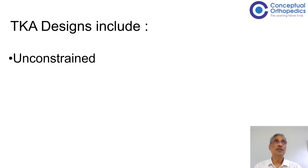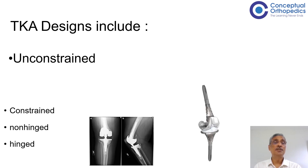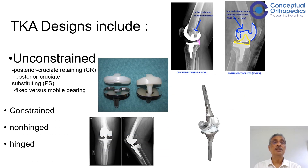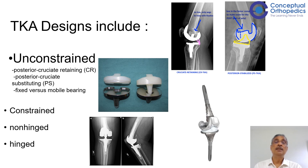Coming to the designs, various types are available. The simplest or least constrained are called the unconstrained ones, and then in the constrained knees you have non-hinged and hinged total knee replacements. Coming to the unconstrained components, you have the cruciate retaining, the cruciate sacrificing or substituting, and the fixed and mobile bearing knees that are available in the market today.